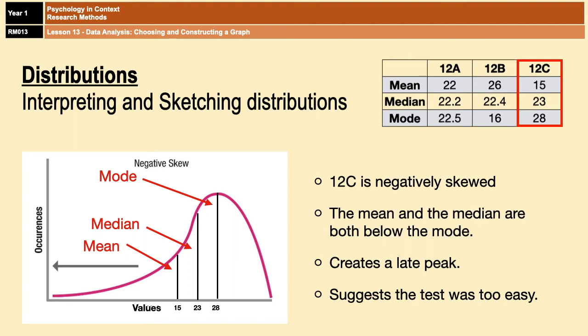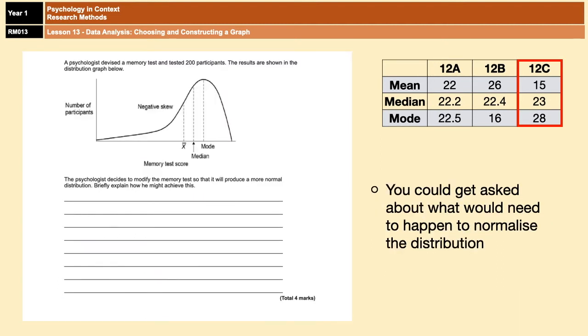I hope that makes sense. So just a few more things before we finish off. The first thing is that you may have noticed that I keep telling you what the various distributions may mean in the context of the research. And in our case, the research is the psychology test that we've given to our three classes. So that's because you could get an exam question that looks a little bit like the one that's on the screen now.